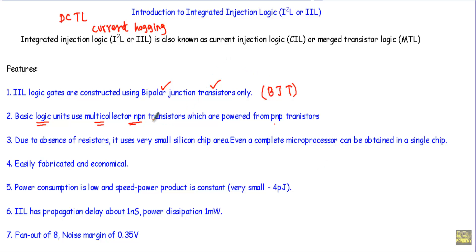We will supply those NPN transistors with PNP transistors. Our PNP transistor will act as a constant current source. Therefore, this circuit will be known as current injection logic. Our PNP transistor will supply constant current to the base terminal of the multi-collector NPN transistor.